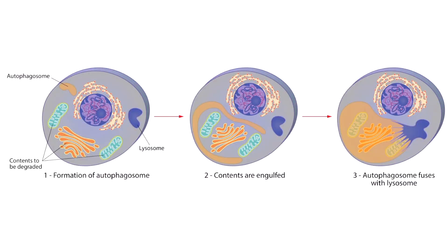Now let's talk about autophagy. This involves the following steps: one, formation of the autophagosome; two, engulfing of contents; and three, fusion of the autophagosome with the lysosome, which leads to hydrolysis of contents by the lysosome's digestive enzymes. Autophagy refers to the cell destroying its own components — hence the name autophagy — and with degradation of intracellular components, the cell size shrinks.